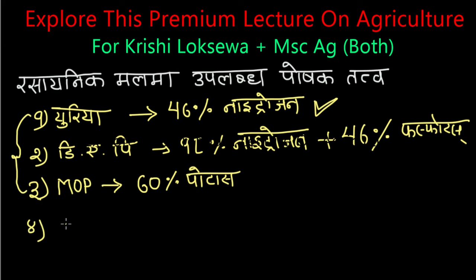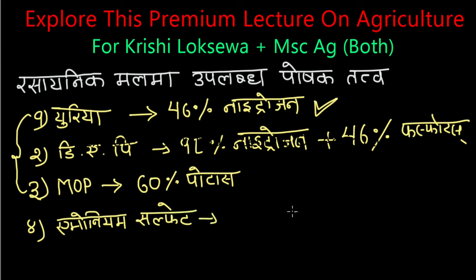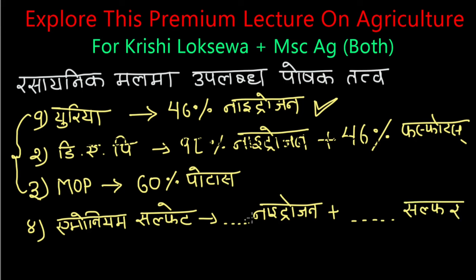Number 4 is Ammonium Sulfate. I will tell you that ammonium sulfate has a little nitrogen plus sulfur. So we have a little nitrogen and a little sulfur in ammonium sulfate.